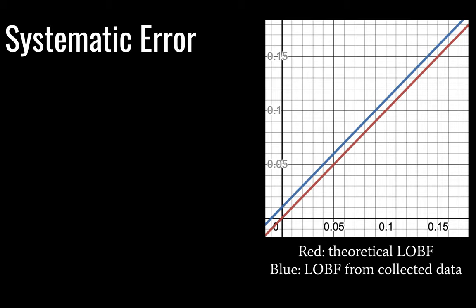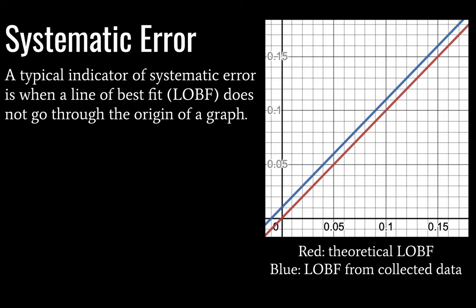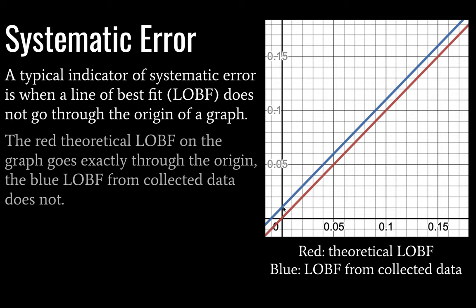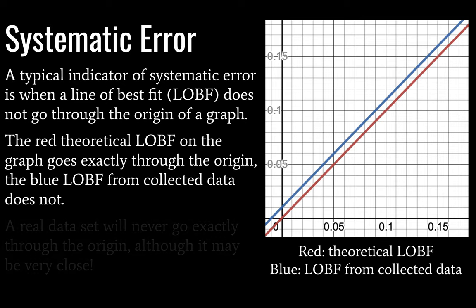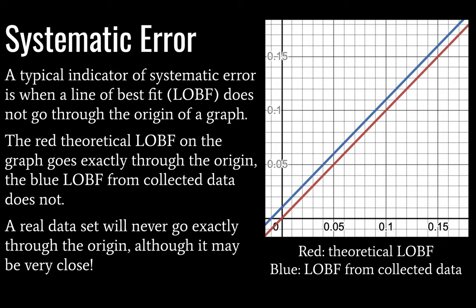Here we see a graph. If you're looking for systematic error in data, a good indicator is when your line of best fit does not go through the origin. Here we see the red line — the theoretical line of best fit — going straight through the origin. But our blue line of best fit from collected data has a y-intercept that is not equal to zero. That y-intercept tells us the amount of systematic error in the system. A real data set is very unlikely to go exactly through the origin.